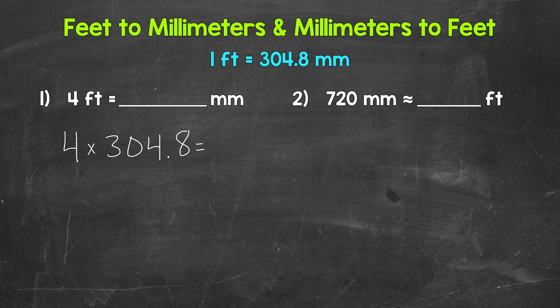And that's how we convert from feet to millimeters. We multiply by 304.8. Now four times 304.8 gives us 1,219.2. So four feet equals 1,219.2 millimeters.